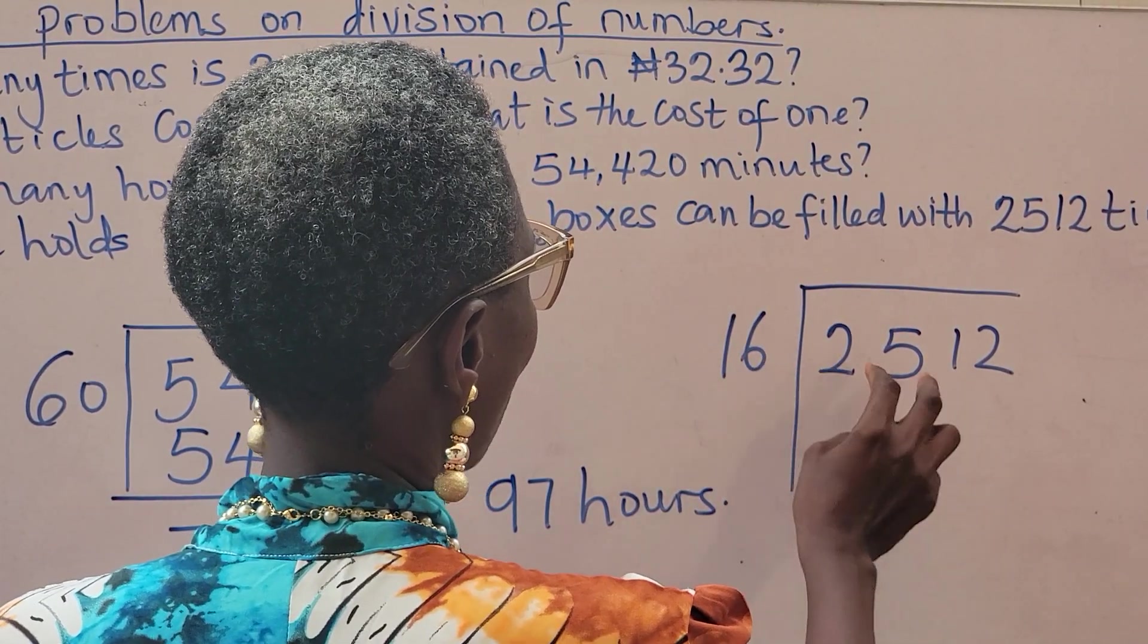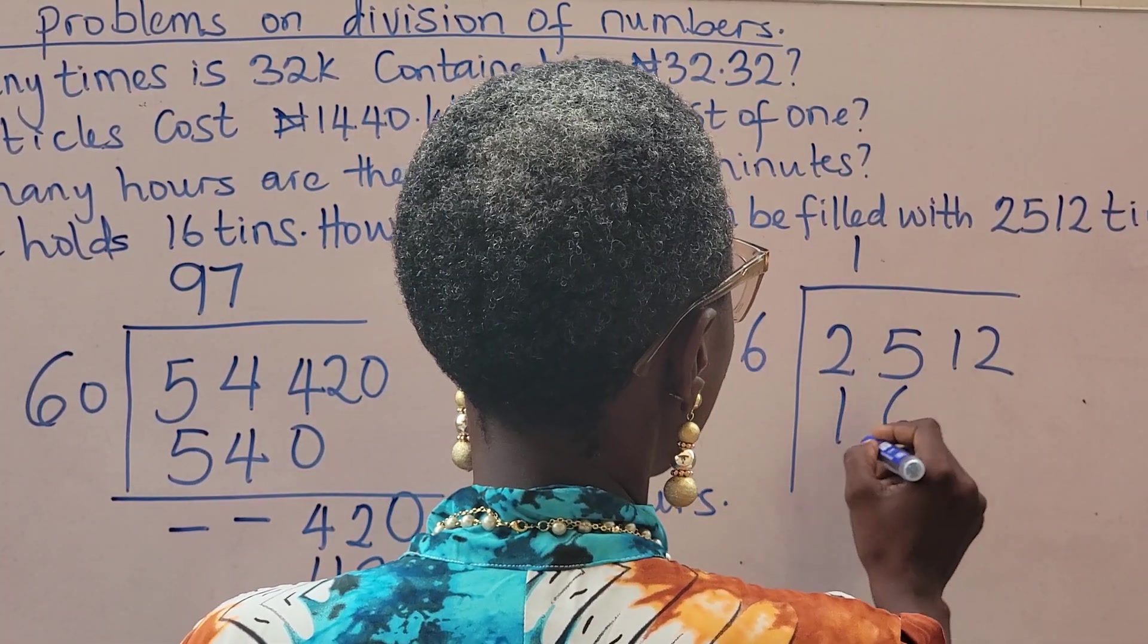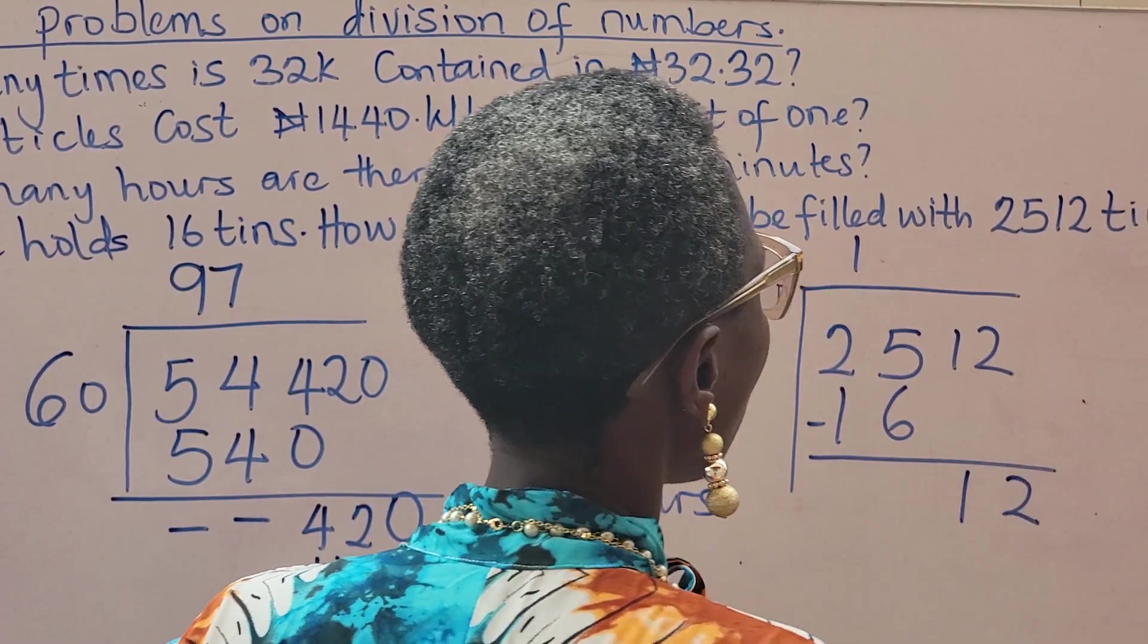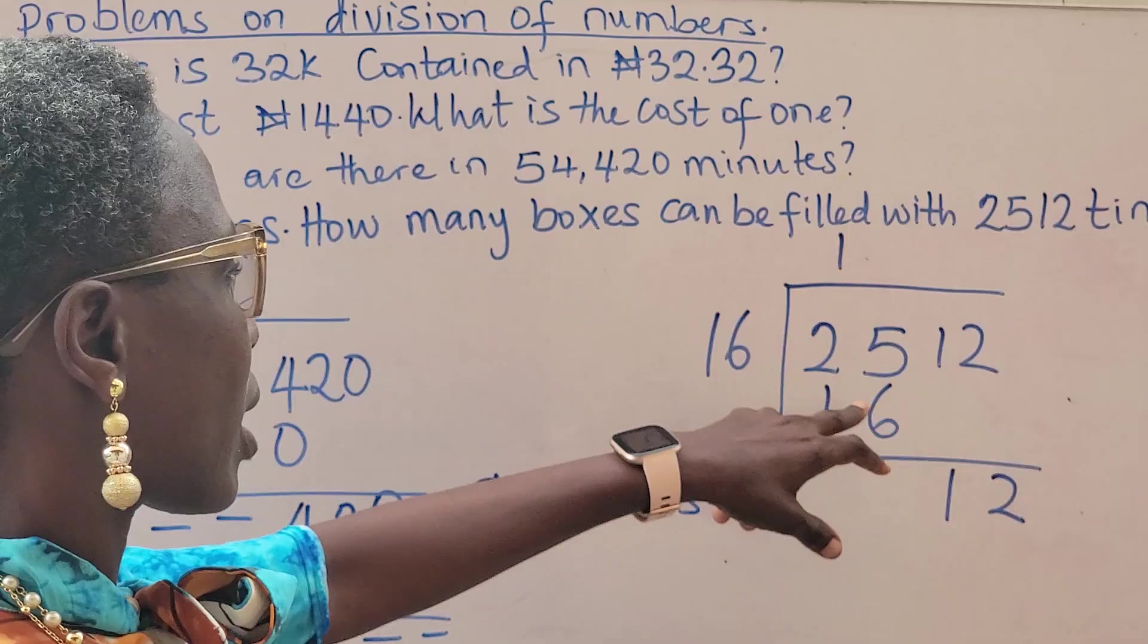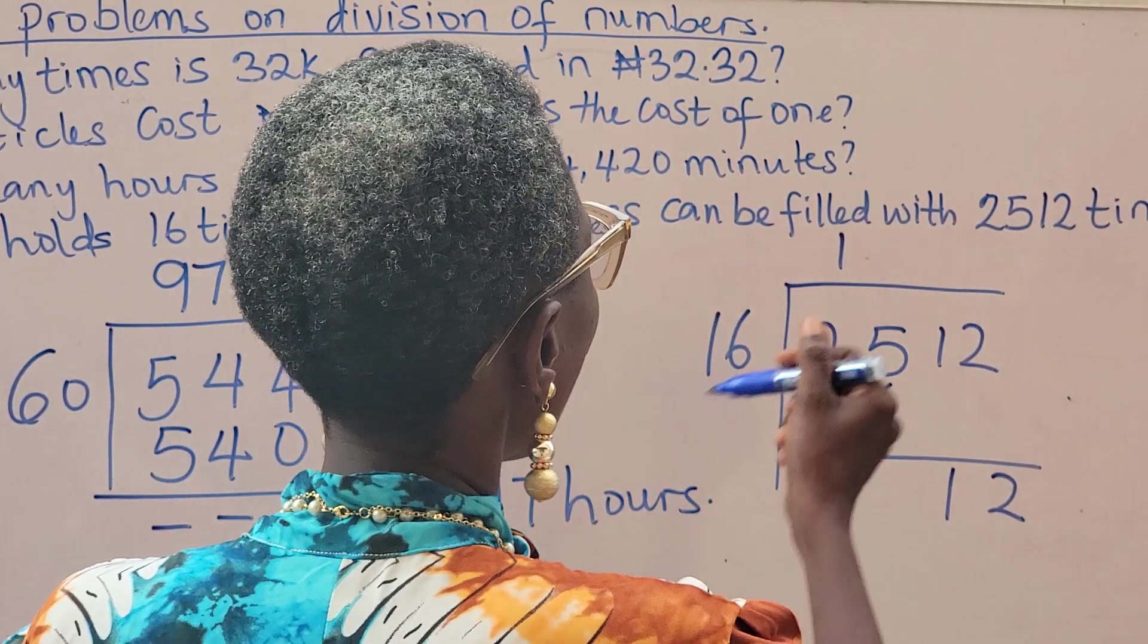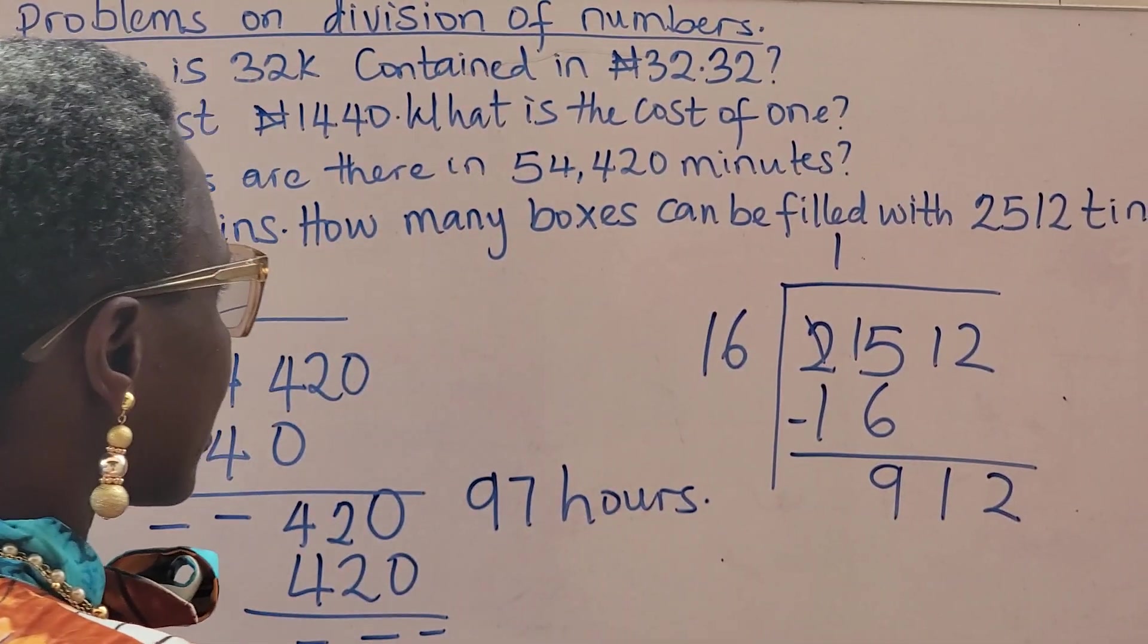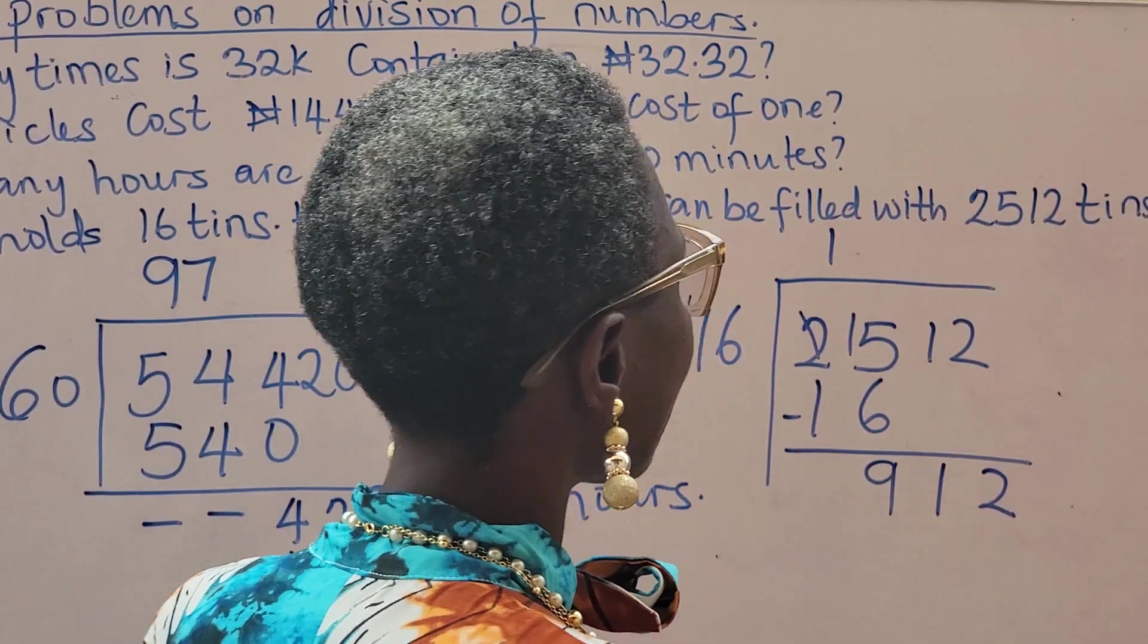25 can actually go. 25 divided by 16, that's just 1. 16 times 1, I have 16. Then you subtract. Always write whatever you are dividing under the number. So we have 15, take away 6, that's 9. So we have 912. You can go with 91.